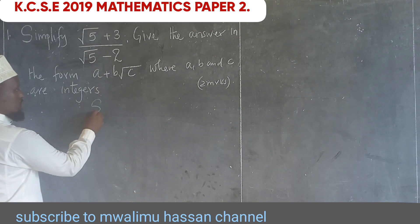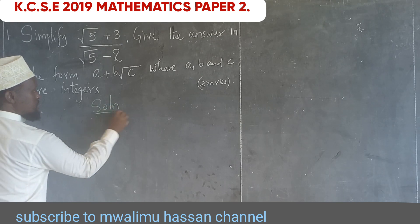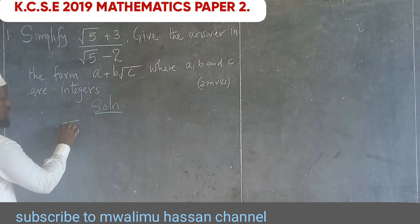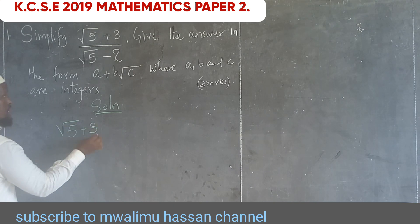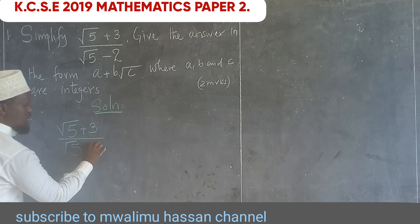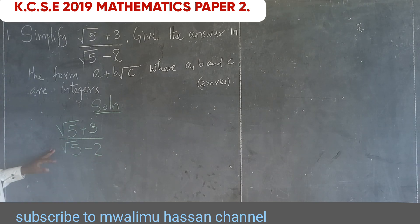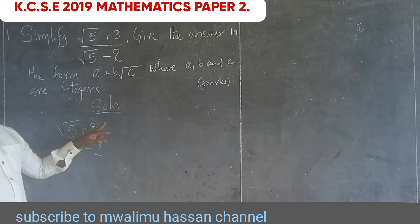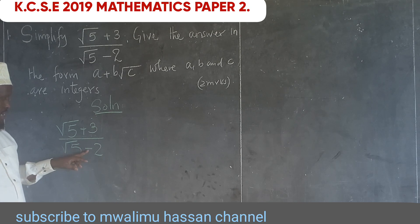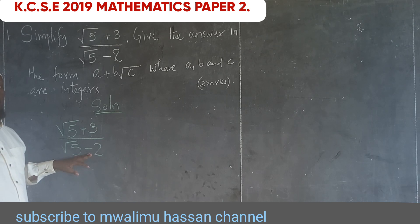To solve this kind of equation, the expression is (√5 + 3) all over (√5 − 2). To simplify this, you have to multiply both the numerator and denominator by the conjugate of the denominator. The sign in the denominator is negative, so the conjugate of the denominator will be positive.